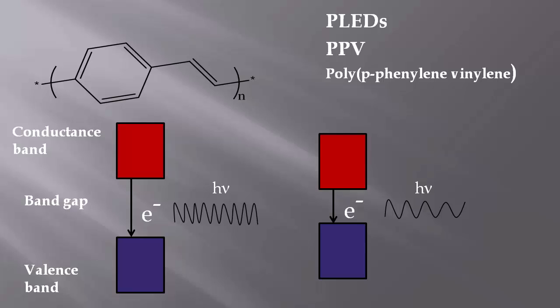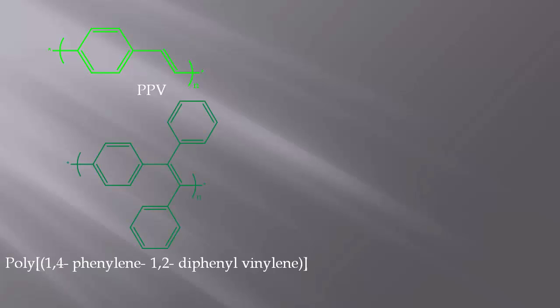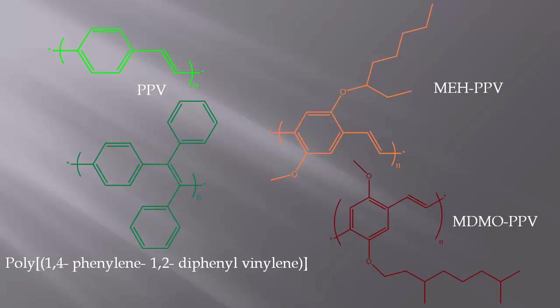Substituents change the energy of the HOMO and LUMO. This is apparent as the unsubstituted PPV can emit yellow-greenish light. This changes to dark green, and so on, as substituents are changed. These substituents also determine the stability and solubility of the polymer.